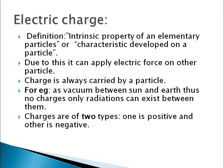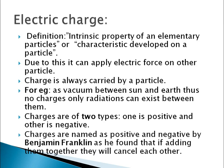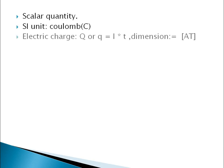Charges are named as positive and negative by Benjamin Franklin, as he found that adding them together will nullify each other. Electric charge is a scalar quantity. Its SI unit is coulomb, denoted by capital C. Electric charge is given by Q = I × t. Its dimension is ampere into time.